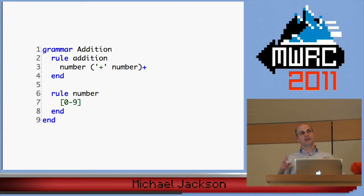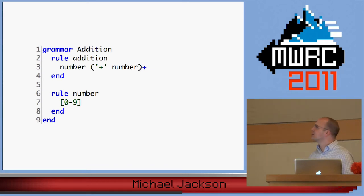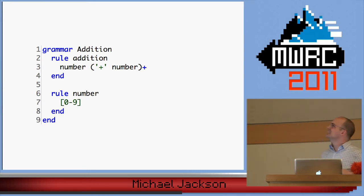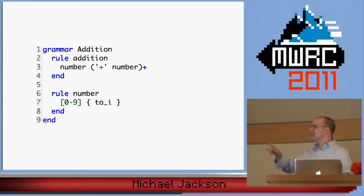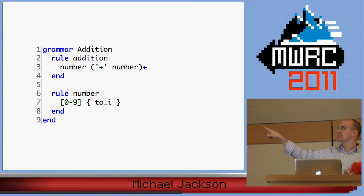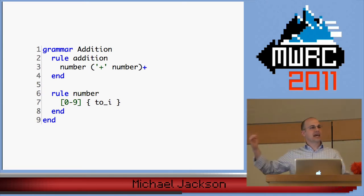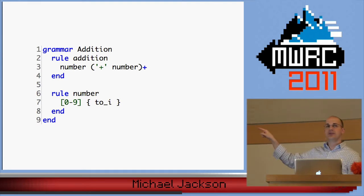Let me go through one more example and then we're going to do some live code — which everybody's advised me not to do, but I think it's more fun. We've got the addition grammar again — a number followed by one or more pluses and then another number. I don't want to get back a string of text because it's a number, so I say: when I get that string of text, call to_i on it, and that's the value of a number. So I'm getting an integer back from my number rule, and then I'll tack on a semantic block to the addition rule. The value of addition is: find all of the times that number matched, inject them into zero, and add n.value every time you come across a number.